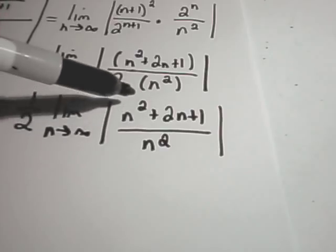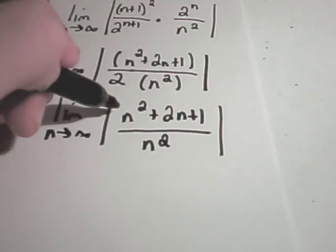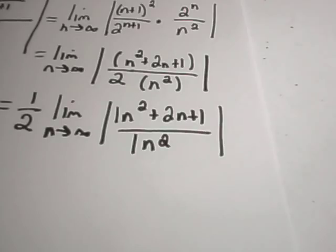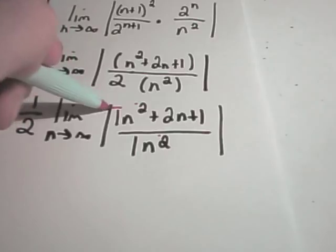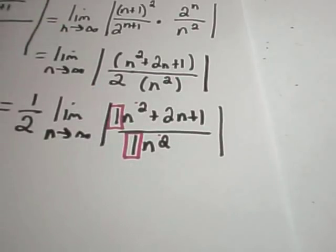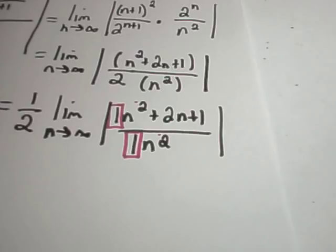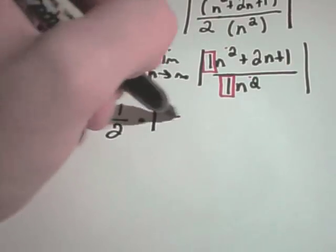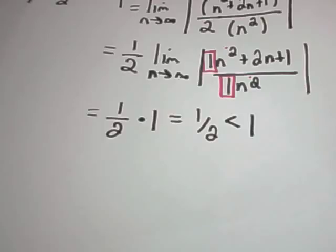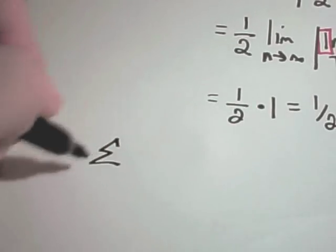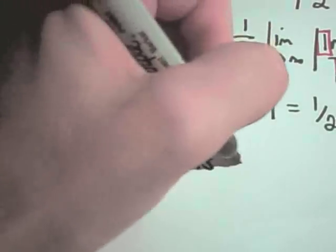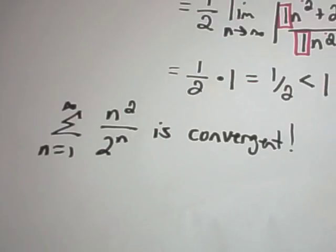If the power on top is the same as the highest power on the bottom, you just take the ratio of their coefficients — that's what the limit as n goes to infinity equals. There's an n squared and an n squared, so I look at the ratio of their coefficients. This limit simply equals one-half times 1, which is one-half. This number is certainly smaller than 1, so we can claim that our original series, from n equals 1 to infinity of n squared over 2 to the n, is convergent by the ratio test.